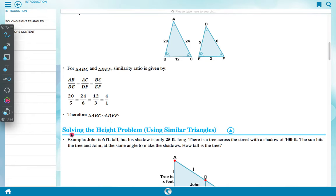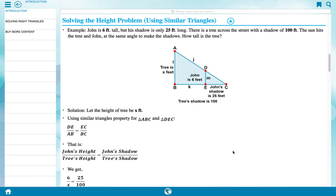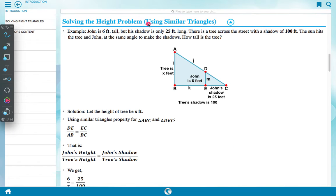Solving height problem using similar triangles. Example: John is 6 feet tall but his shadow is only 25 feet long. There is a tree across the street with a shadow of 100 feet. Sun hits the tree and John at the same angle to make the shadows. How tall is the tree? Now this is the figure as per question. AB tree is x feet, DA John is 6 feet, BEK John's shadow is 25 feet, and tree shadow is 100 feet.